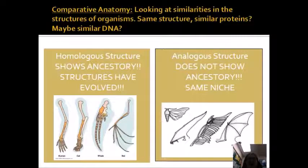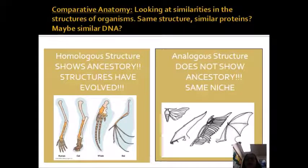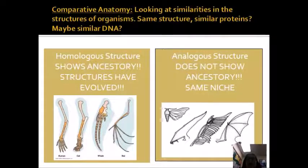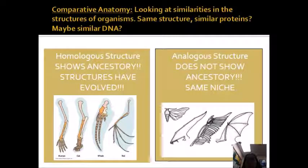Comparative anatomy allows us to look at the structure of organisms and notice their similarities. If two organisms have the same structure but with changes, this is probably due to random mutations to the DNA, which resulted in changes in the protein, which resulted in alterations to the structure, which were then selected for through the process of natural selection.